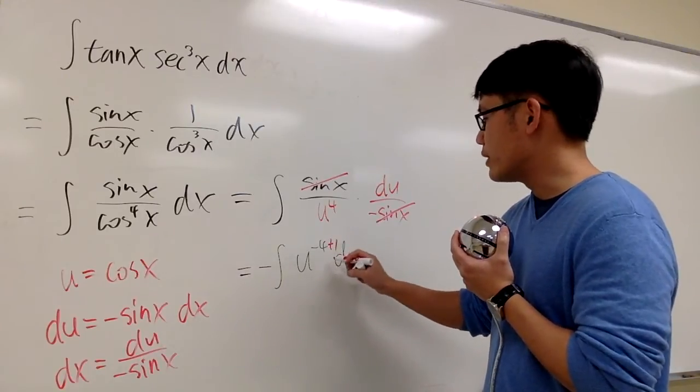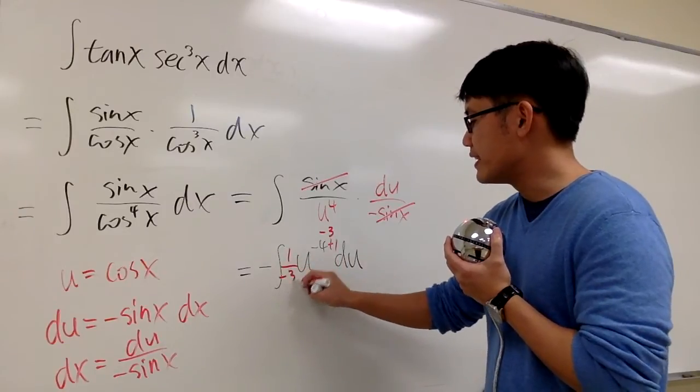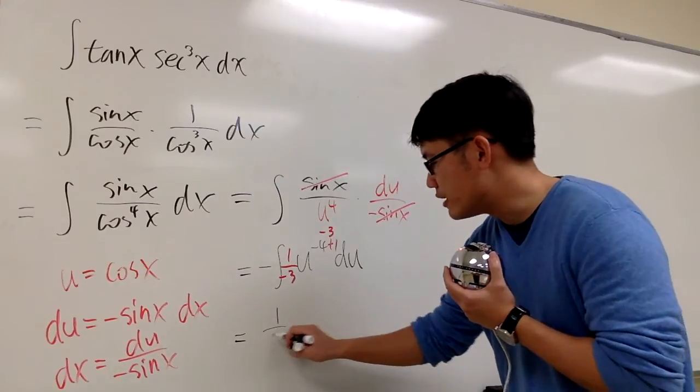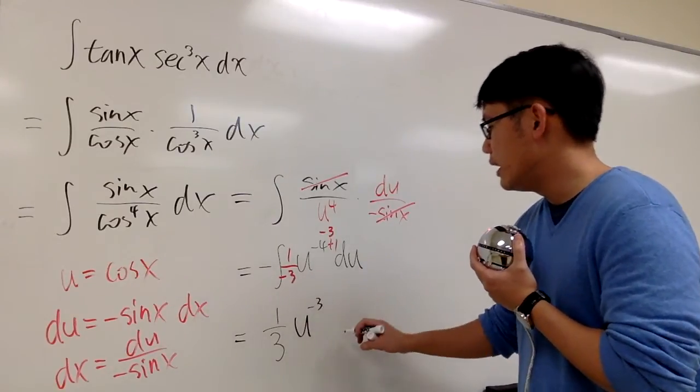Let me add one to the exponent, which is going to be negative three, and then divide it by that, so 1 over negative three. This is what? Negative negative becomes positive one-third, and then we have u to the negative three power, and that's it.